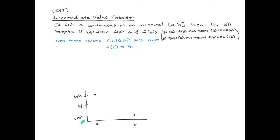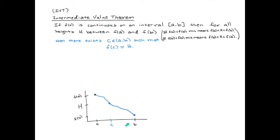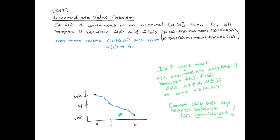That sounded like jargon, so let's look at a picture. We have an interval from a to b with a and b included. In order to get from x = a to x = b with a continuous function — I can't pick this pen up off the iPad — I have to go through the height h. The function could go up and then come down, or down and then up, but it doesn't matter. If it is continuous on the closed interval including a and b, then you absolutely must go through all intermediate heights between f(a) and f(b). This is true because if it's continuous, there can't be any vertical asymptotes or jumps.